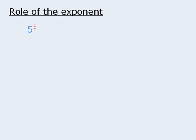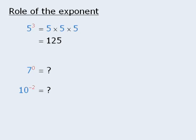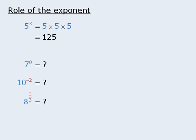Originally, we said that the exponent tells us how many times to multiply the base by itself. However, as we have seen, this definition doesn't help us evaluate expressions where the exponent is equal to 0. The original definition will also be hard to apply when the exponent is negative — what does it mean to multiply 10 by itself negative 2 times? Or 8 by itself 2 thirds times? So our definition of exponent will be modified later in this module.